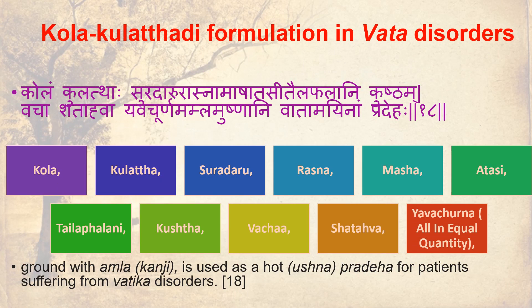Kola Kulatthadi Formulation for Vada Disorder: Kola Kulatthaha, Suradharu Rasna, Masha, Adassi, Thaila Falani, Kushta, Vajashadahua Yavachurnam — all in equal quantity, ground with Amla or Kanti, used as a hot Pradeha for patients suffering from Vadika Disorder.